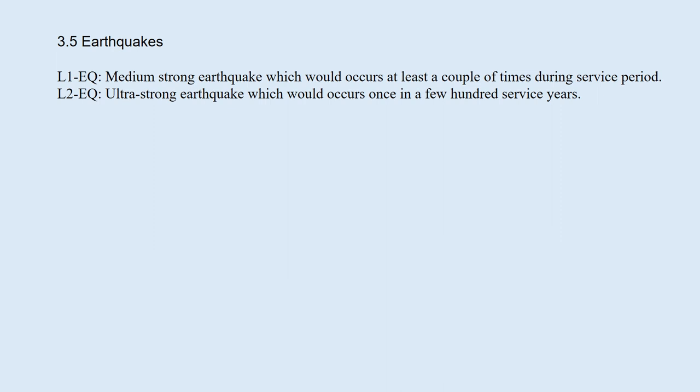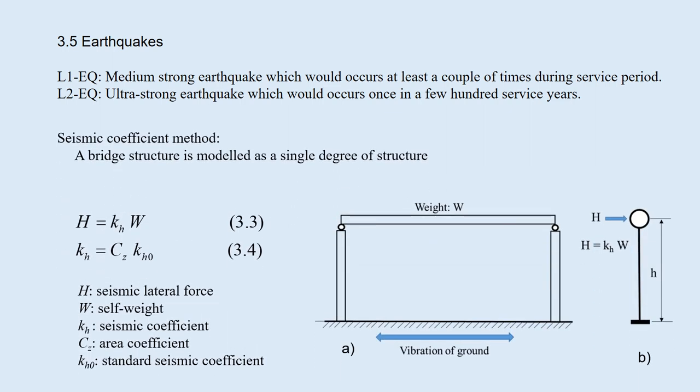3.5, Earthquakes. Japan is situated in a seismic zone. We adopt two levels of design earthquakes, L1 earthquake and L2 earthquake. L1 earthquake is a medium-strong earthquake which is expected to occur at least a couple of times during the service period. The seismic-coefficient method is the most commonly used design method.